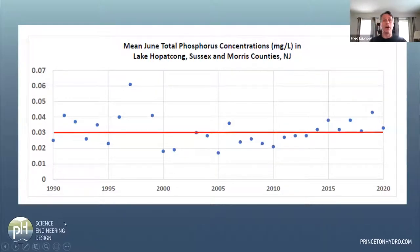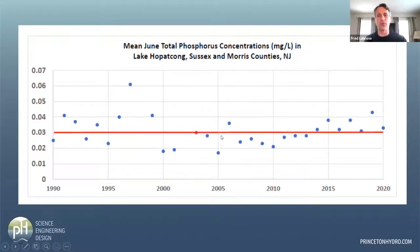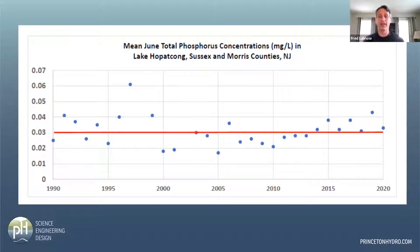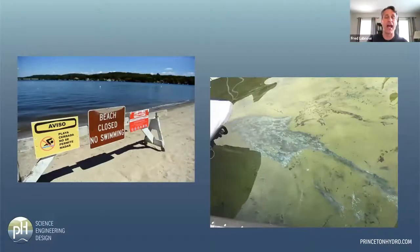We graphed the average June phosphorus concentration of Lake Apacon. From 2010 to 2020 we were seeing an increasing trend in average phosphorus concentrations in June. We sampled the lake about a week before the HAB hit, and once the average concentration exceeded 0.04 milligrams per liter, that triggered the HAB event at Lake Apacon. We've been working with the Lake Apacon commission, counties, municipalities, the foundation, and Rutgers University on a large HAB grant.